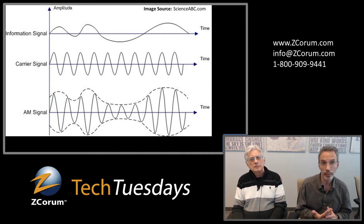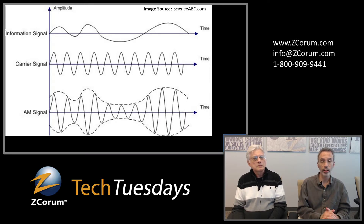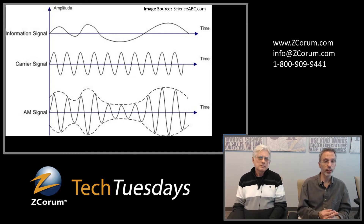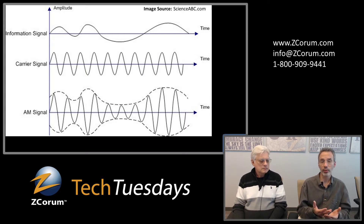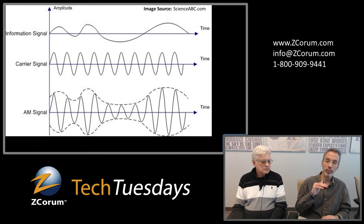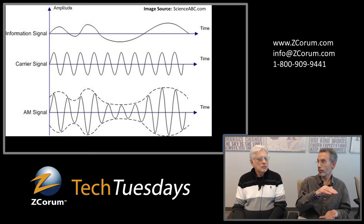Here's an example of a radio signal. You've got three different things you're looking at: the information signal you want to send, your carrier signal which is your wave — a typical sine wave — and then the modulated signal, or AM signal, amplitude modulated. The way it works is as the peaks of your signal go up, your amplitude changes and your modulated signal changes accordingly.